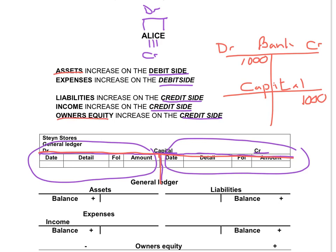Owner's equity — that is capital — will increase on the credit side. The word that I write in the details column is the name of my double entry. So in my bank account, I will write the word 'capital' to indicate that this double entry will be recorded in the capital account. And in the capital account, you will write the word 'bank' to indicate that this double entry appears in the bank account on the debit side. It is very important to remember that for every entry you have to complete one entry on the debit side and one on the credit side, and indicate that this amount appears in two accounts.